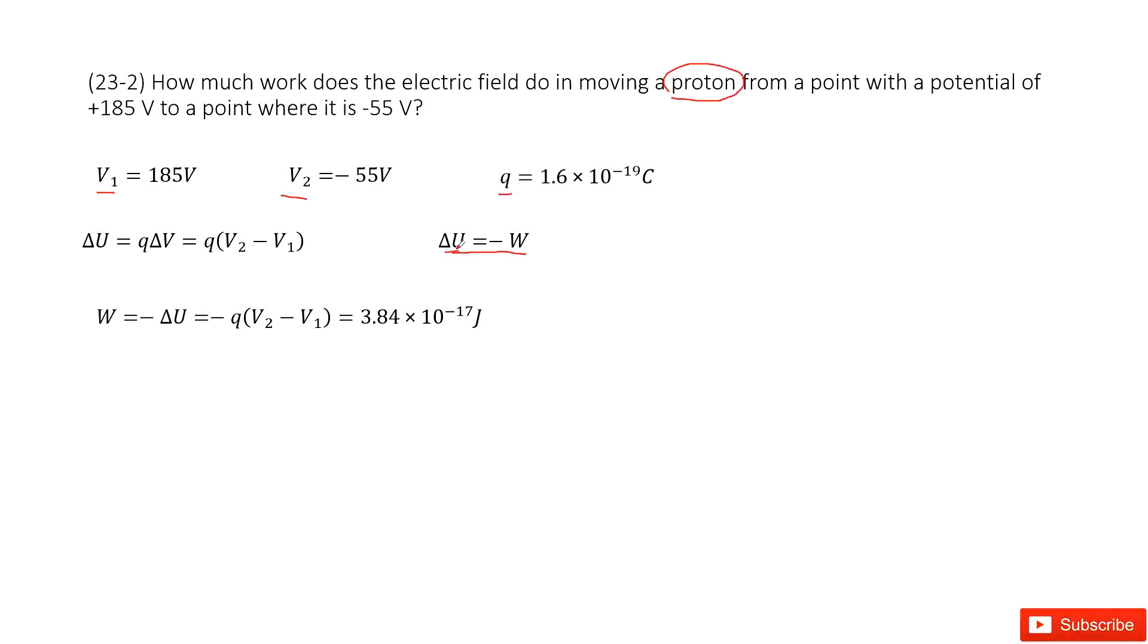So there, which energy changes? Electric energy, right? So electric energy can be written as the charge times the potential change. So you write down the charge times the potential change. So potential change is V2 minus V1.